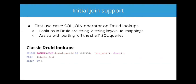With a classic Druid lookup, say you wanted to take the destination airport ID and get the airport name instead. You would write a query like: SELECT lookup(destination_airport, 'air_port') — where air_port is a key-value mapping of airport ID to airport name — then COUNT(*) FROM flights_fact GROUP BY 1. So you're getting all the airport names along with how many flights are involved with each airport.